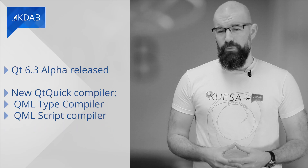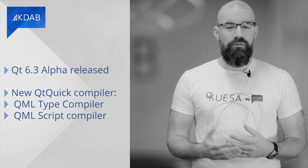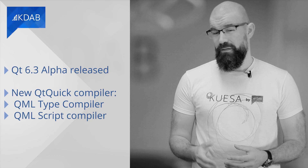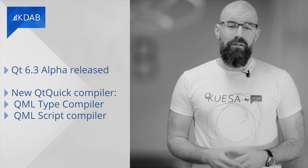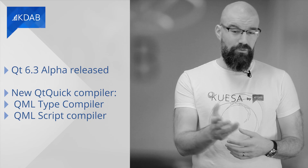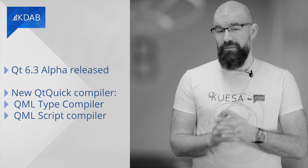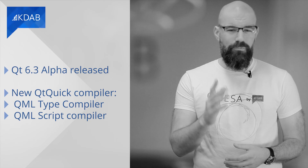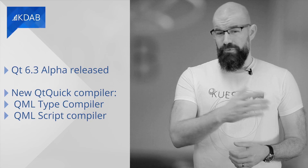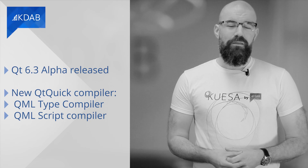Further, with version 6.3, a new Qt Quick Compiler will be introduced, consisting of two components: the QML Type Compiler and QML Script Compiler. The QML Type Compiler will compile QML object structures into C++ classes, while the QML Script Compiler will compile functions and expressions in QML files into C++ code. You can read more about the technical details in the blog post below. Let us know in the comments which new features you find the most useful.